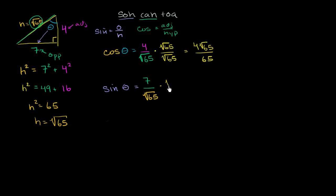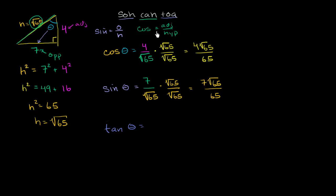If we want to rationalize, multiply by the square root of 65 over the square root of 65 — the numerator becomes 7 square roots of 65, and the denominator becomes 65. For the tangent of theta, SOHCAHTOA's TOA tells us tangent equals opposite over adjacent. The opposite is 7, and the adjacent is 4 — it's right next to the angle. So tangent of theta equals 7 over 4. We've figured out all the trig ratios for theta.